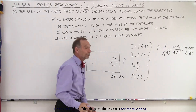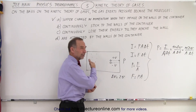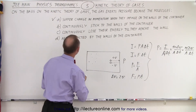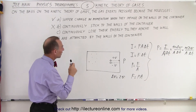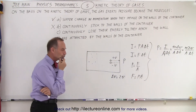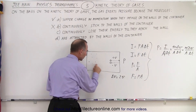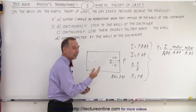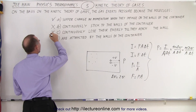Option B: molecules continuously stick to the walls of the container. Well, if they stick to the walls, how would they get unstuck, and how long would they be stuck? That doesn't seem like a reasonable explanation. Option C: molecules continuously lose their energy until they reach the wall. That means the molecule would be slowing down as it travels, then speeding up again at the wall — that doesn't make sense. There's no reason for the molecule to be slowing down.